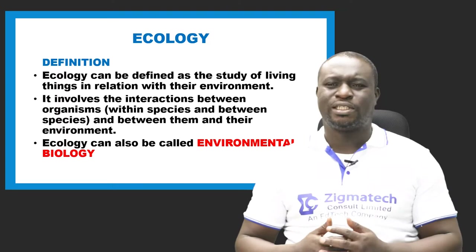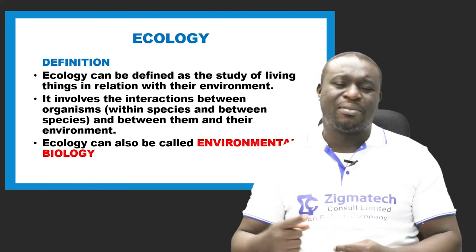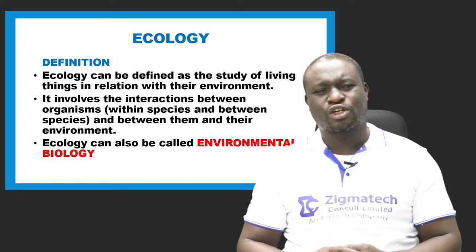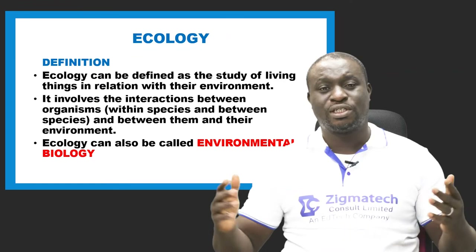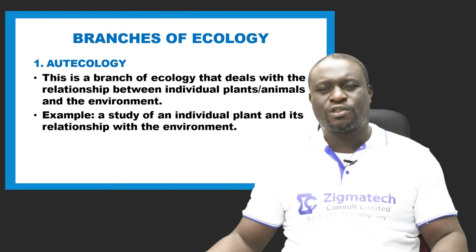Ecology involves the interaction between organisms — not just organisms and the environment, but interaction between organisms and between them and their environment as well. Another name for ecology is environmental biology. Ecology simply has to do with environment and how we relate with our environment. We have two important branches of ecology.